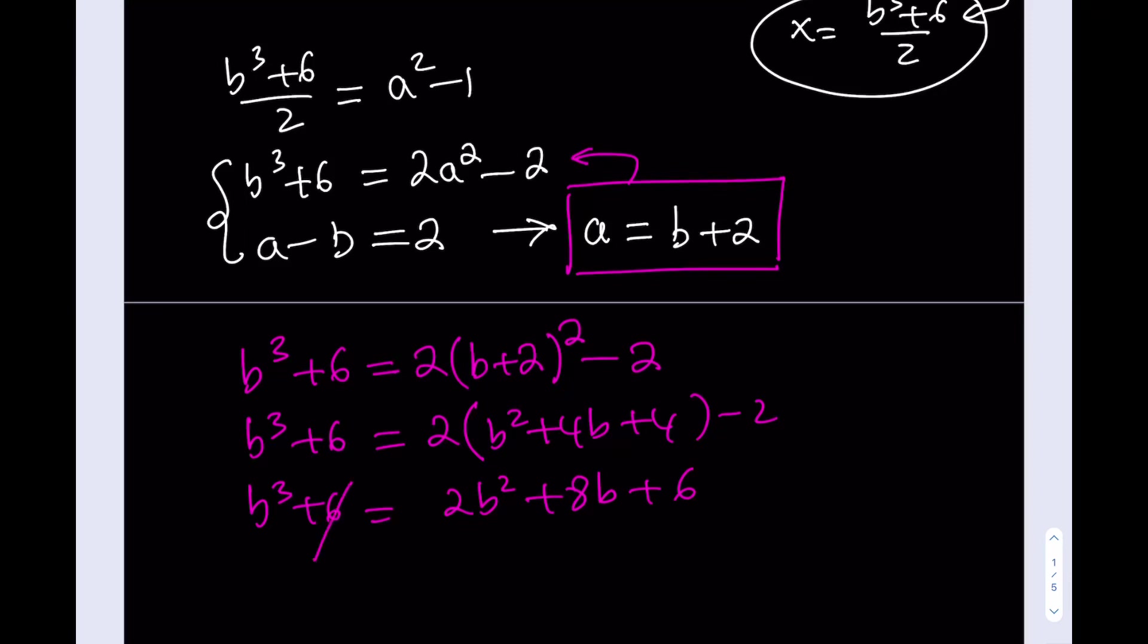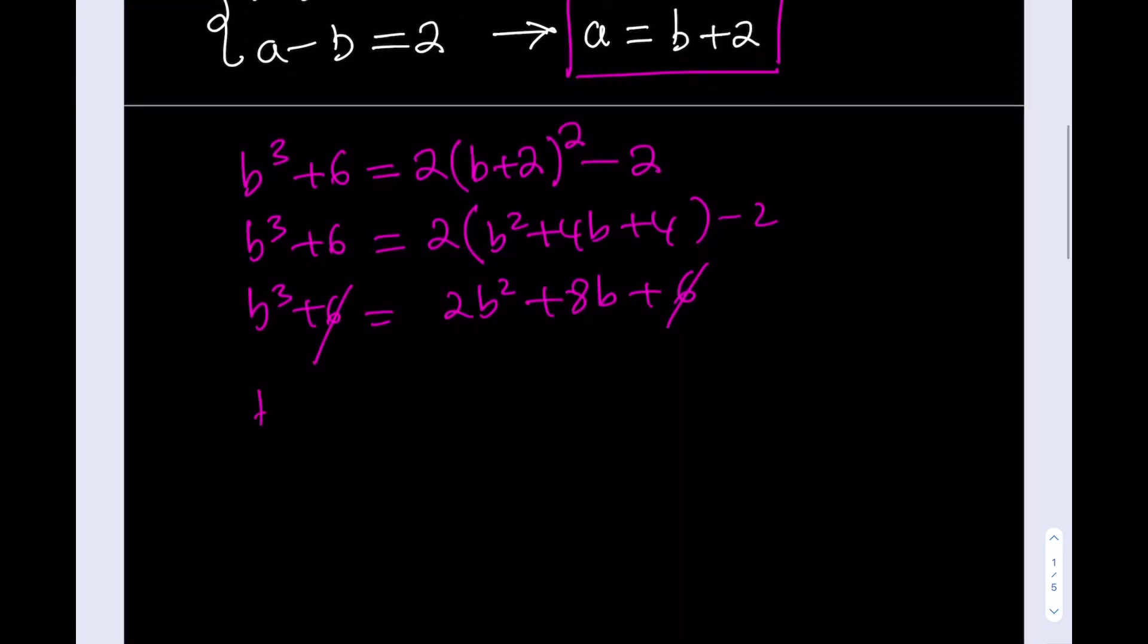One of the things that's really cool about this equation is that 6 cancels out. Beautiful. When constants cancel out, then I get a nicer equation from here, and I can reduce the degree. So, put everything on the left-hand side and factor out a B. Beautiful. B cubed minus 2B squared minus 8B is equal to 0. Awesome.